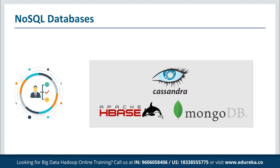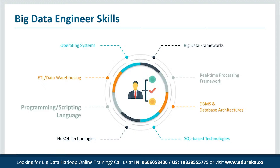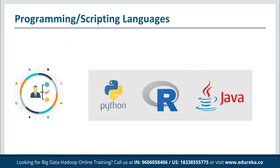Next, programming languages: various programming languages can serve the same purpose, and knowledge of just one is enough as the flavor changes but the logic remains the same. If you're a beginner, you can go ahead with Python as it is easy to learn due to its easy syntax and good community support. R has a steep learning curve and was developed by statisticians; it is mostly used by analysts and data scientists.